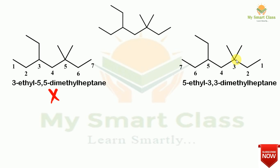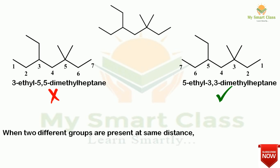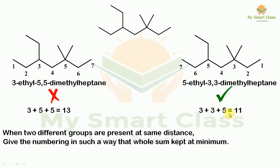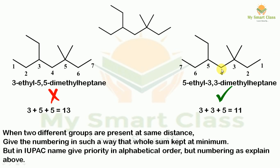Numbering from right to left gives the name 5-ethyl-3,3-dimethylheptane. The rule is: when two different groups are at the same distance, we do the summation of their position numbers and choose the numbering that gives the minimum sum. From left to right: 3+5+5 = 13. From right to left: 5+3+3 = 11. Since 11 is least, the correct name is 5-ethyl-3,3-dimethylheptane. Note that ethyl still comes first alphabetically even though its number is larger.